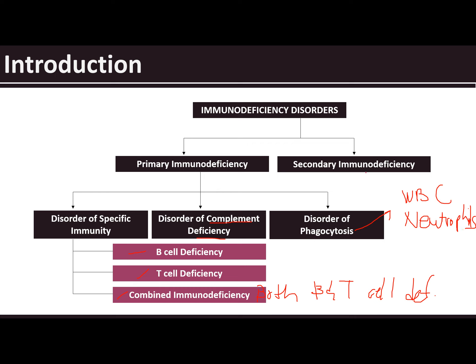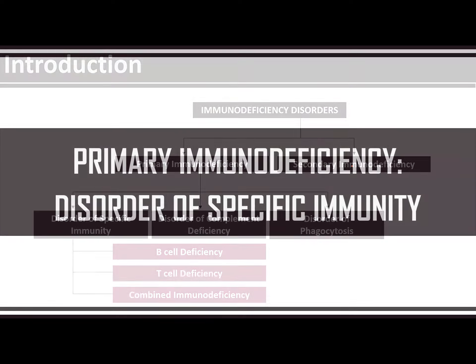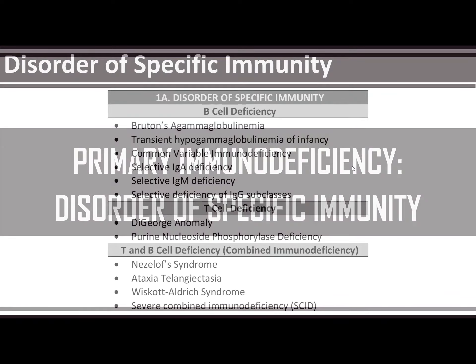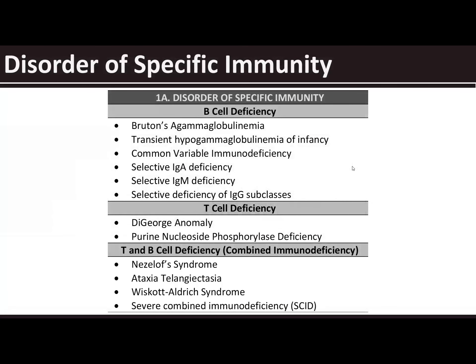We also have secondary immunodeficiency. Let's start with the disorders of specific immunity. Under disorders of specific immunity, there are three types: B cell deficiency, T cell deficiency, and combined immunodeficiency.